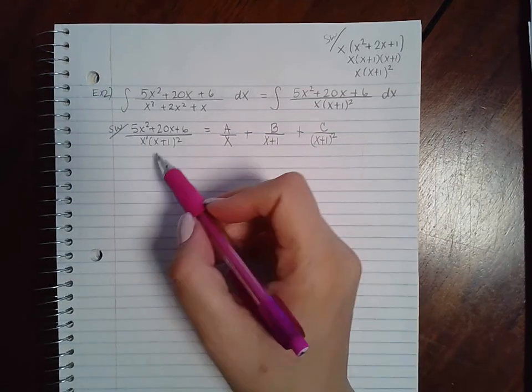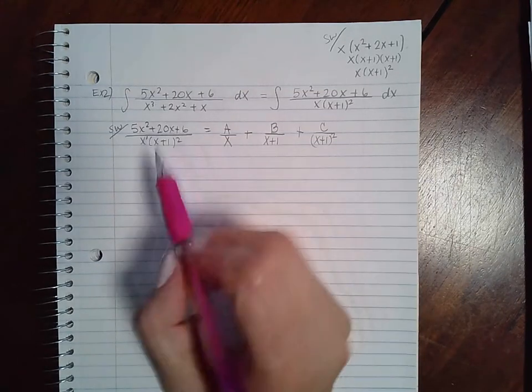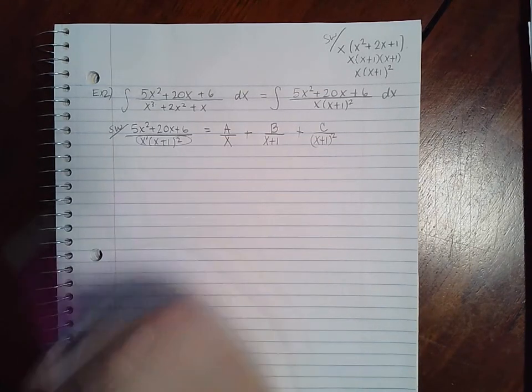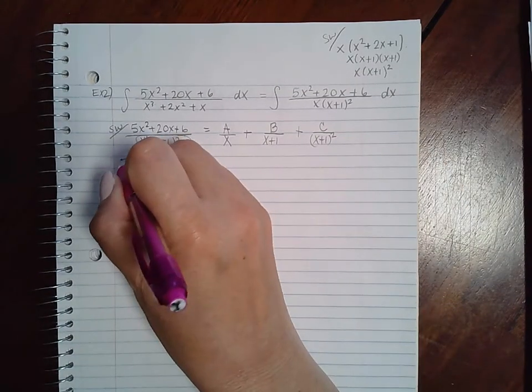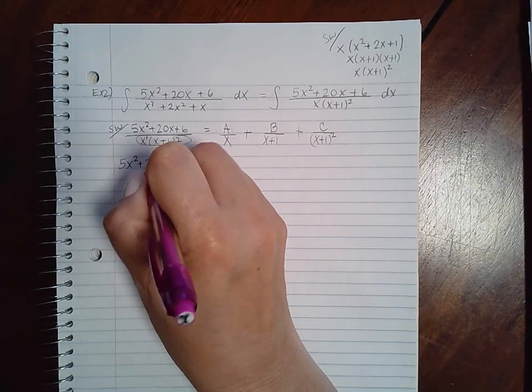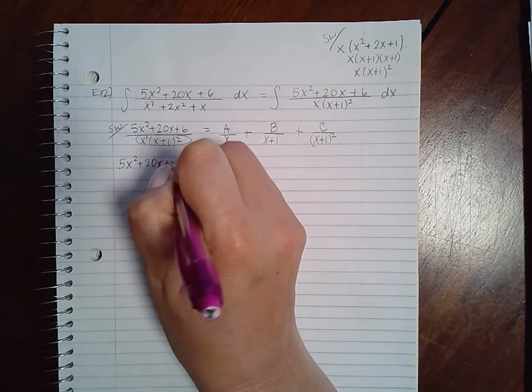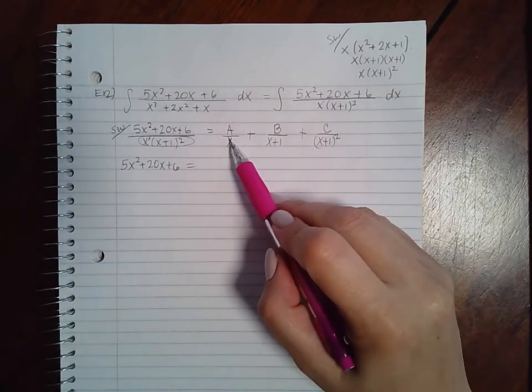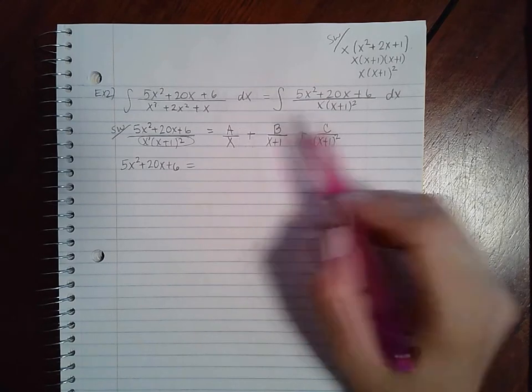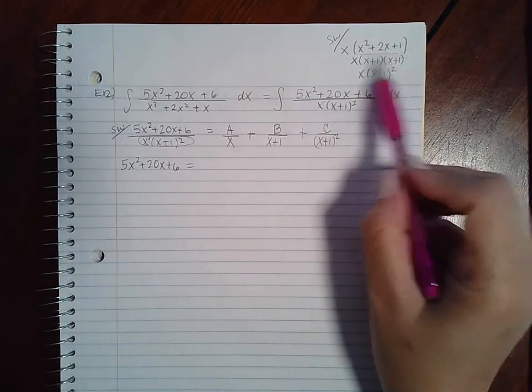So we do the same as before where we multiply by the common denominator. Common denominator is this, so this one ends up with...